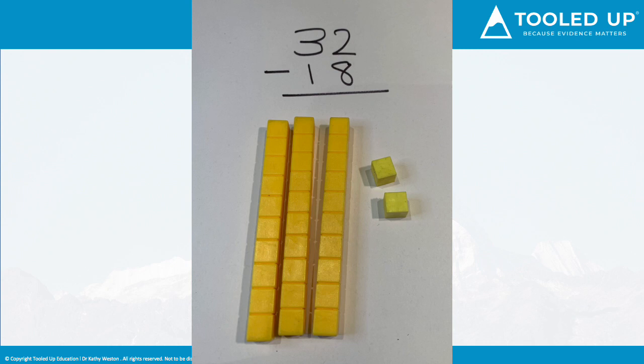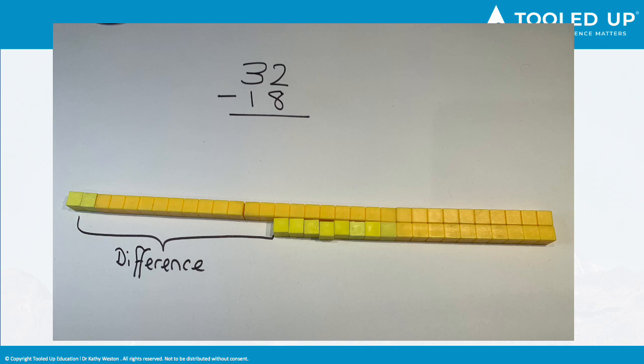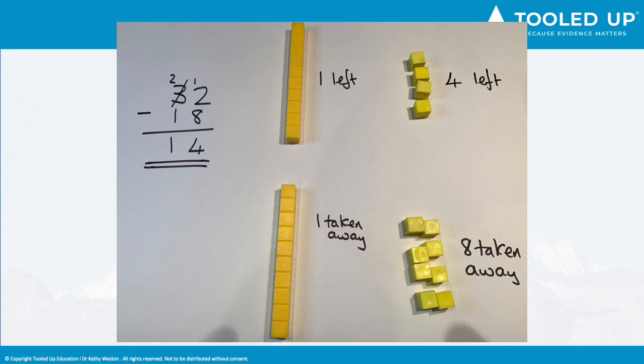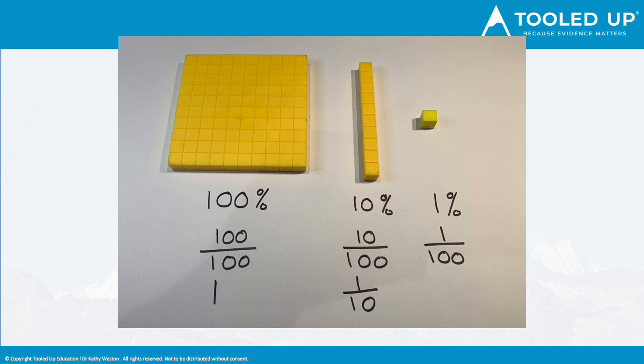Concrete materials help with understanding and if we understand we can recall more easily. Here we have 32 made up of 3 tens, 2 units and we want to take away 18. We can lay it out and find the difference or we can do a block sum and model why we need to take 1 ten and break it into units in order to take away. We can physically take away 8 units and then 1 ten leaving 14.